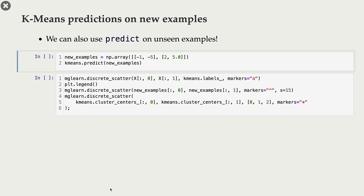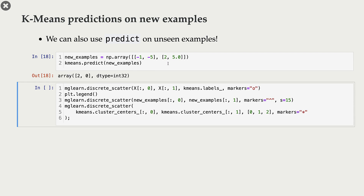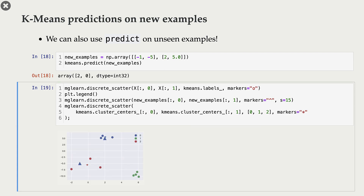With K-means, we can also predict on unseen examples. Here are a couple of new examples not in our training data, and we can call kmeans.predict on these. Basically, these are our two new points — our first point is close to the blue center, so it gets assigned to the blue cluster. Our model is just these centers, and whenever you have a new example, we find its distance from all centers and pick the cluster with minimum distance.